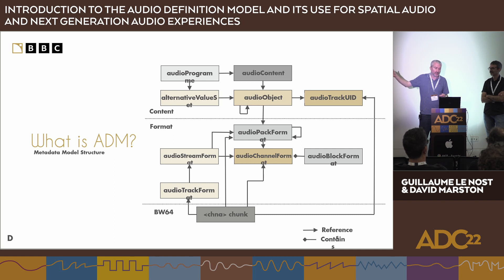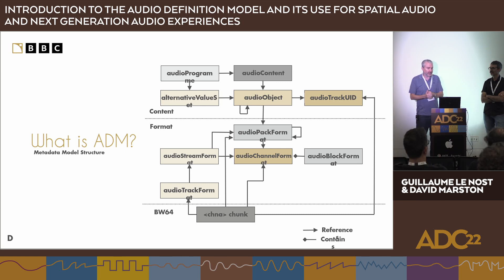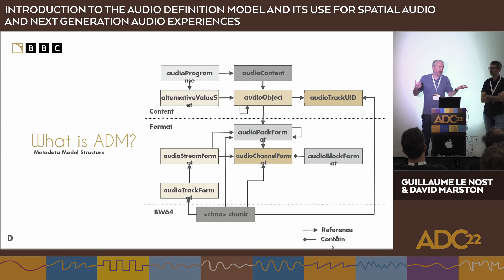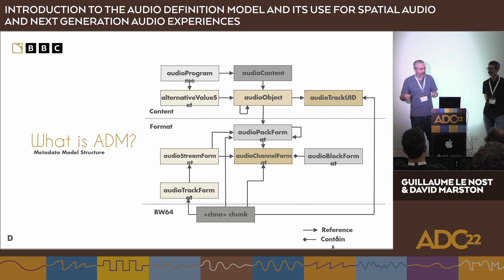Within the audio channel format, it's divided up into block formats. If the channel is static, we just need one block, but we could have dynamic metadata — the sound moving around in space — giving us a sequence of values over time. If we have two speakers, left and right, they belong together, so we group them into what we call a pack format. The ADM also has common definitions providing many commonly used formats such as stereo, so we don't have to keep redefining them.